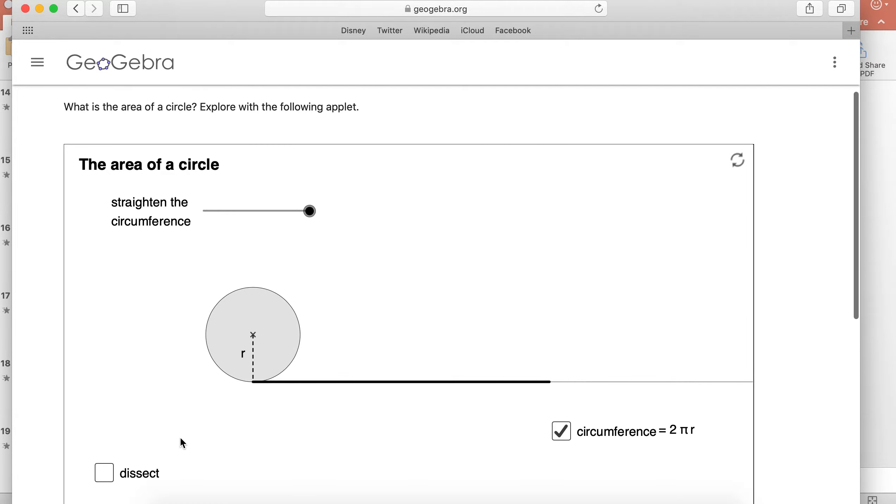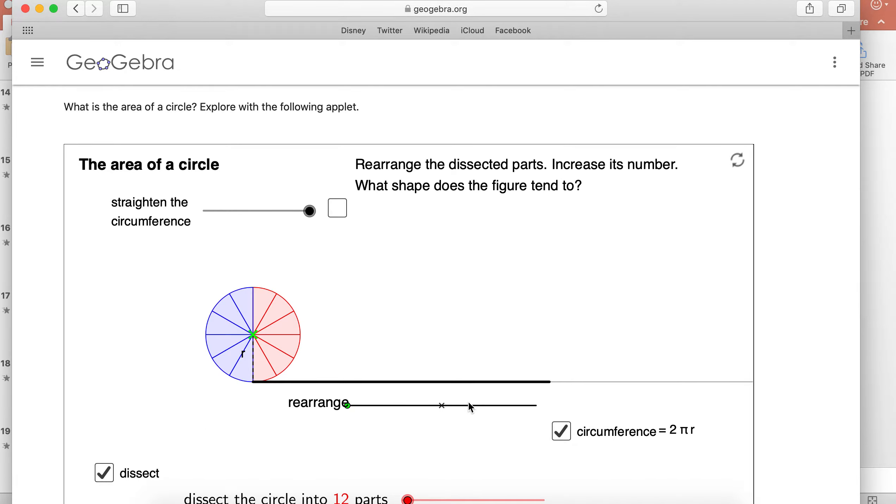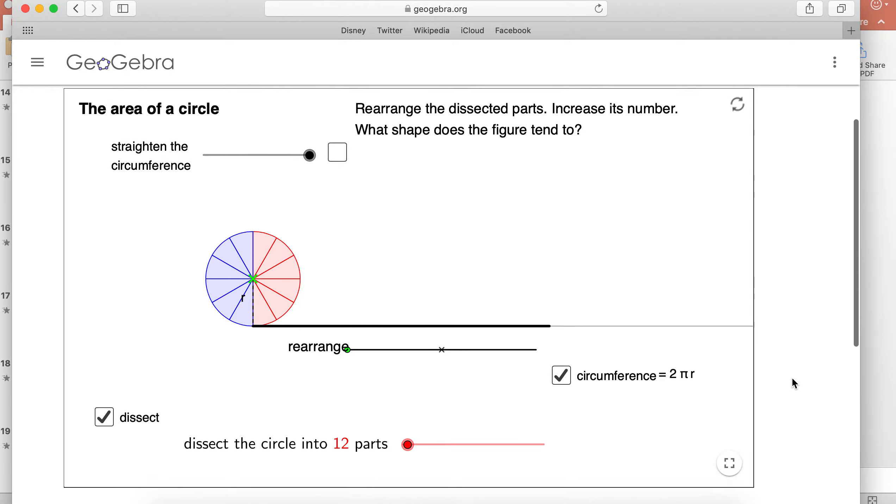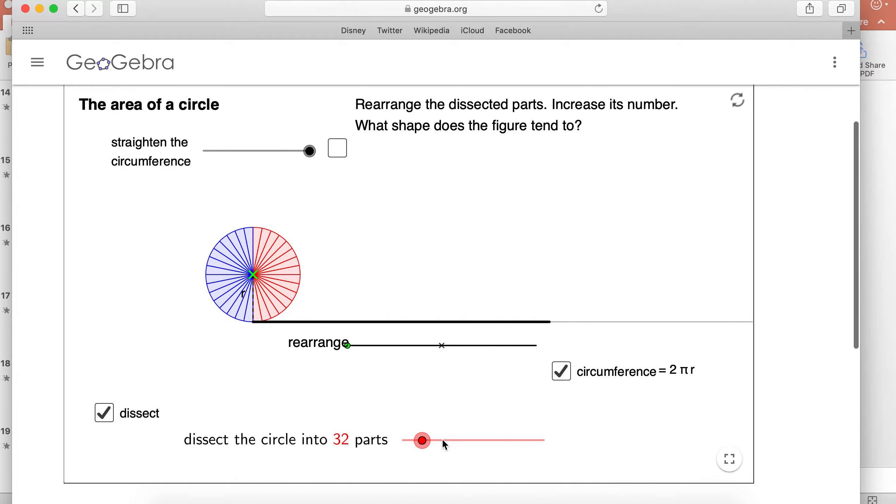You're then going to dissect it. What I mean by this is we're going to break it into a certain number of pieces. We have the red pieces and the blue pieces. With this applet, you can decide how many parts you want to dissect it into. You could go with more parts or just like six parts.